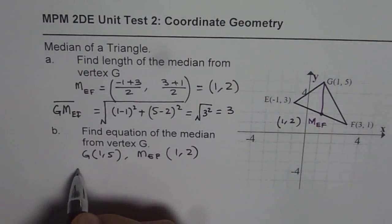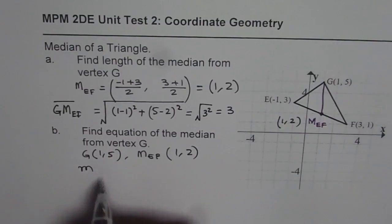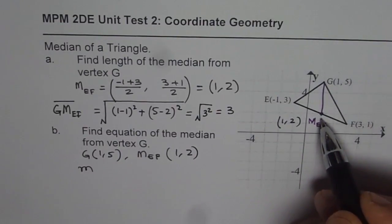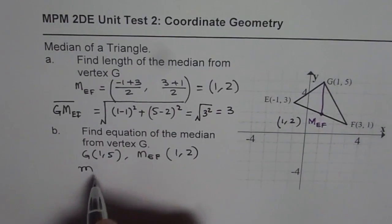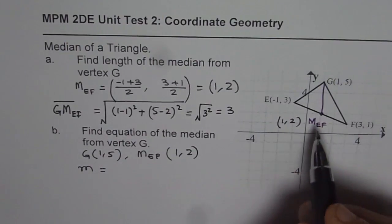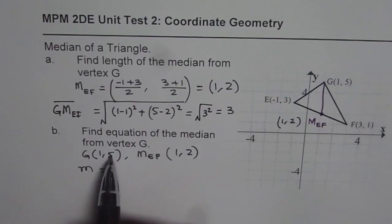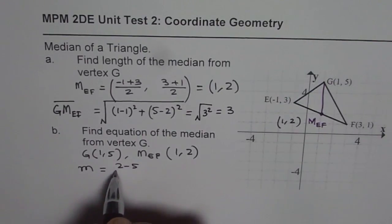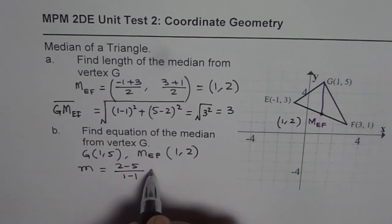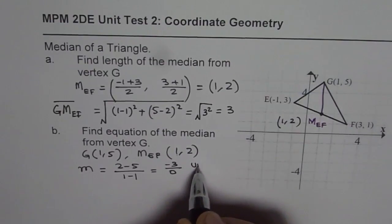So to find the equation of a line, we need to find slope. So I'm writing small m from G to this for the median. And small m is rise over run. That means difference of y values. Difference of y values here is 2 minus 5 divided by the difference of x values, which is 1 minus 1. And that gives us minus 3 over 0, which is undefined.